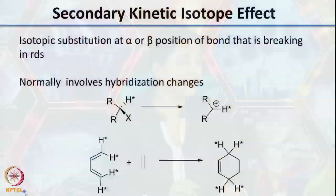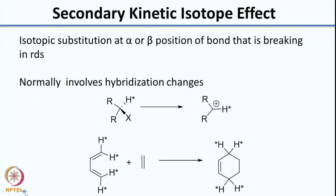Today what we will be doing is looking at what is called a secondary kinetic isotope effect. In the secondary kinetic isotope effect, the isotopic substitution occurs at an alpha or beta position of the bond that is breaking in the rate determining step. So we are not looking at the C-H bond that is actually breaking, but at bonds that are at the alpha or beta positions to the bond that is breaking.